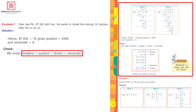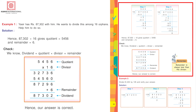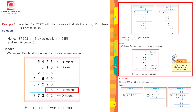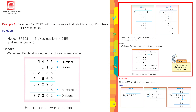Let's verify using the formula: dividend equals quotient multiplied by divisor plus remainder. The quotient is five thousand four hundred and fifty-six and the divisor is sixteen. Multiplying 5456 by sixteen gives seven thousand two hundred and ninety-six. Adding the remainder six gives seven thousand three hundred and two — which matches the dividend. The answer is correct.